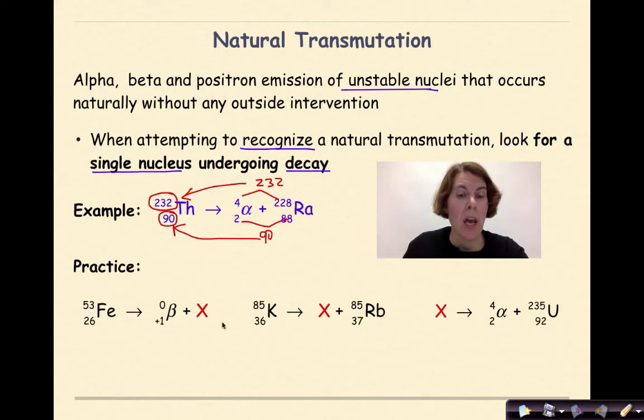Welcome back, let's see how you did. Let's look at our first one here. We have iron-53 undergoing positron decay, and we're solving for X. We have a mass number of 53, so that means our mass number for X also has to be 53. Our atomic number over here is 26, so 1 plus some other number must equal 26, so the atomic number here has to be 25.